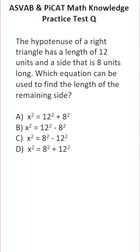This math knowledge practice test question for the ASVAB and PyCat says: the hypotenuse of a right triangle has a length of 12 units and a side that is 8 units long. Which equation can be used to find the length of the remaining side? If it's helpful, you may want to make a quick sketch of a right triangle. As a reminder, on the actual ASVAB and PyCat, you'll have scratch paper, but you won't have a reference sheet or a calculator.